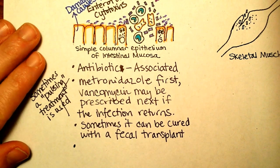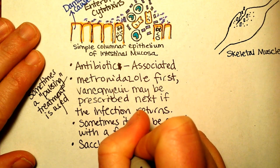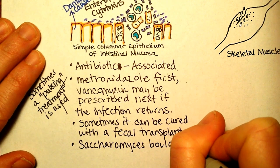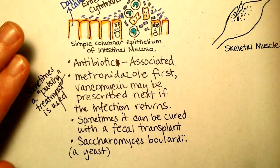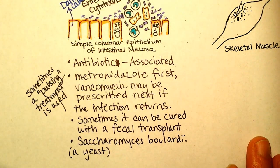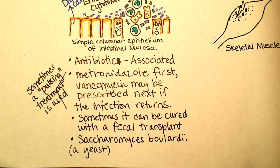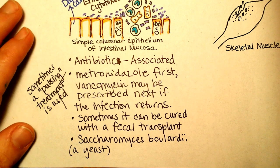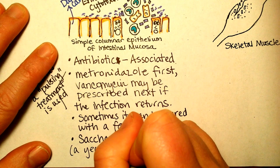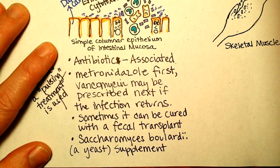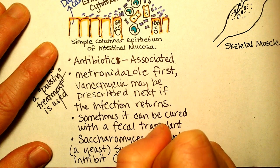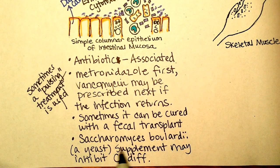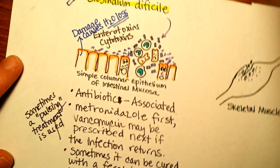Another thing worth noting is that Saccharomyces boulardii, a yeast, has been used in some clinical trials to inhibit C. diff and seems somewhat effective as a treatment to prevent it coming back. What they think is that the yeast may give off chemicals that inhibit the C. diff. For people at higher risk but otherwise healthy, this might be something worth talking to their doctor about as a possibility.